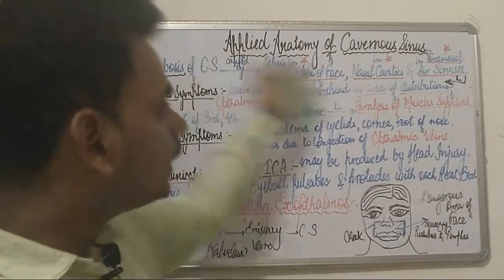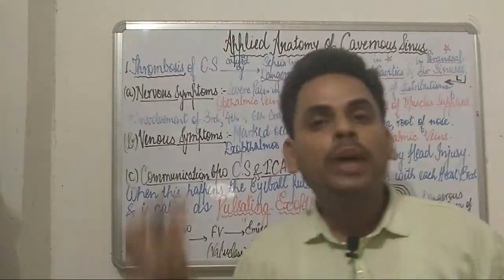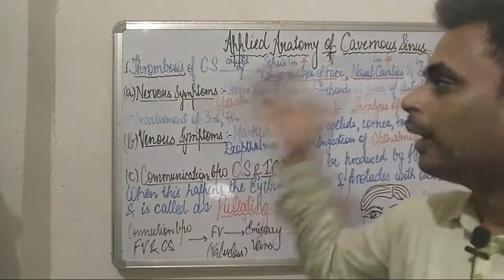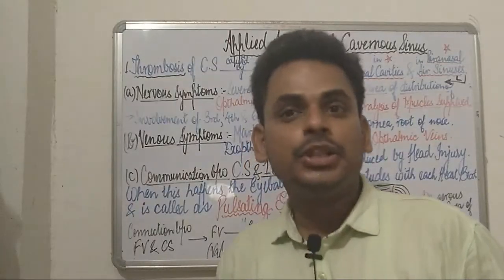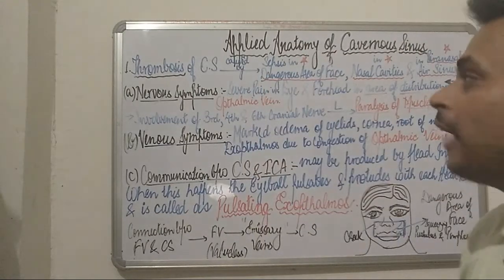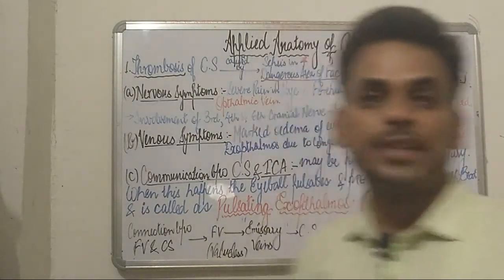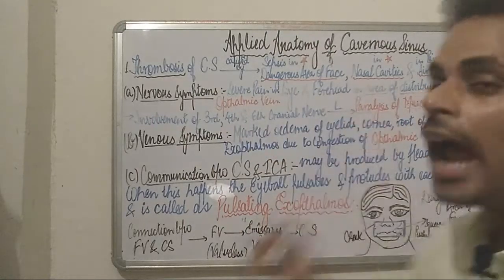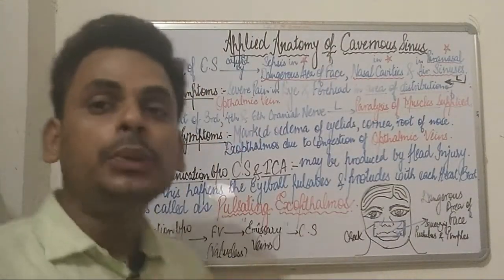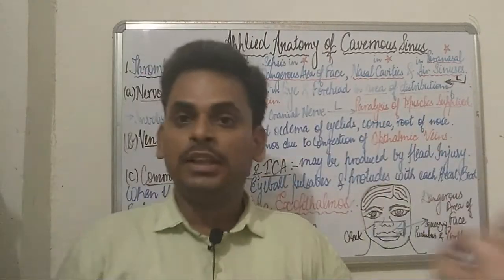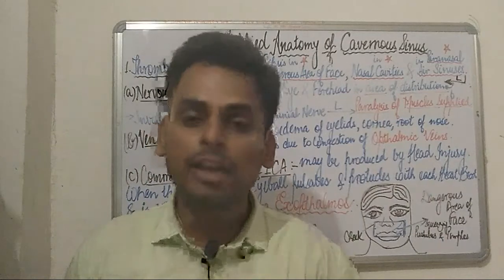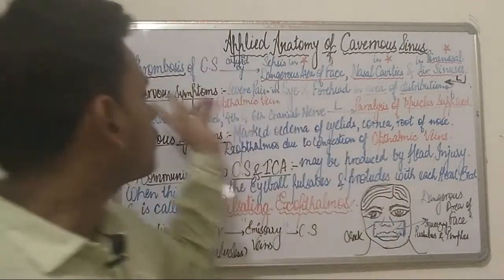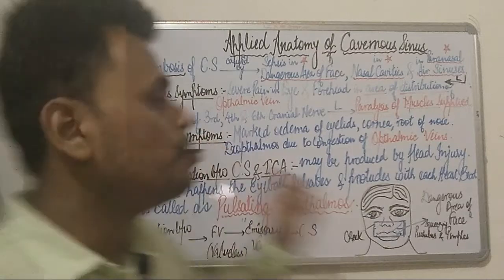Thrombosis of the cavernous sinus can lead to a variety of symptoms manifesting as nervous and venous symptoms. The nervous symptoms most commonly seen include severe pain in the eye and the forehead region, particularly in the area of distribution of the ophthalmic vein. Since the ophthalmic veins are also devoid of valves, infection can spread retrogradely and cause thrombosis.